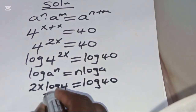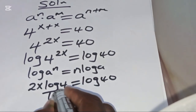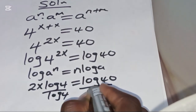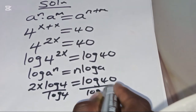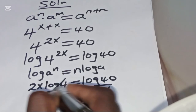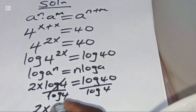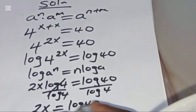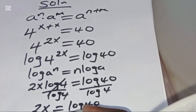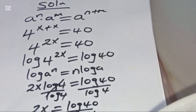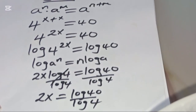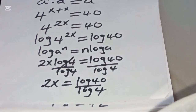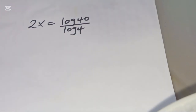Let's divide both sides by log(4). Dividing both sides by log(4), we now have 2x = log(40) divided by log(4).